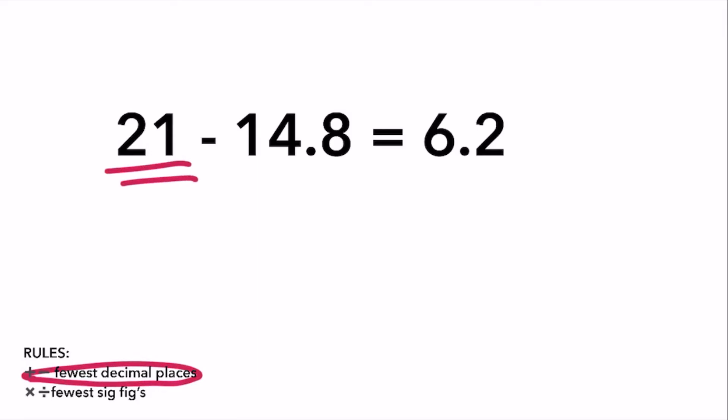So we have to round our answer to also have no decimal places. Looking at our answer 6.2, the 2 means that the 6 stays the same. So our final answer is 6.